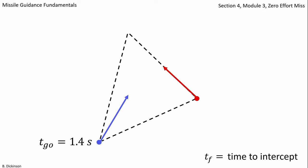Now consider that the pursuer is not on a collision course. It has some heading error, and we happen to know for this heading error that the time-to-intercept or the time-to-the-missed distance is 1.4 seconds.